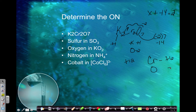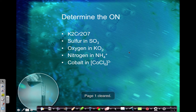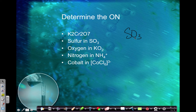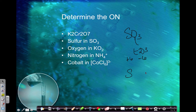Now let's look at sulfur in sulfur trioxide, SO3. There's no charge, so the overall oxidation numbers need to equal zero. Oxygen is negative two; there are three of those, so that's negative six. I need a positive six to cancel that out and equal zero. Since sulfur only has one atom, sulfur's oxidation number is positive six.